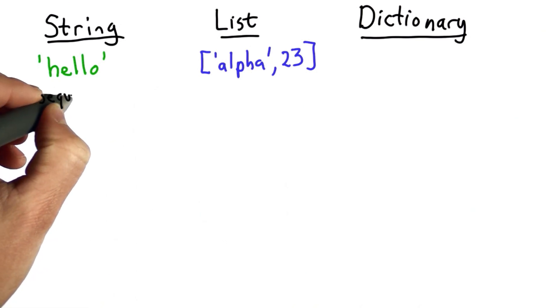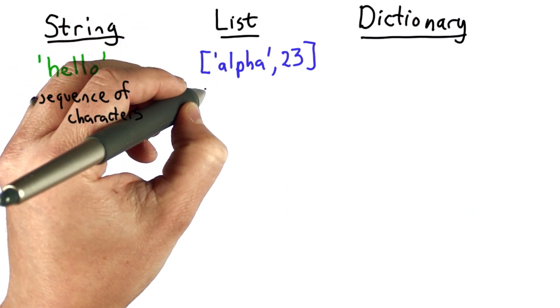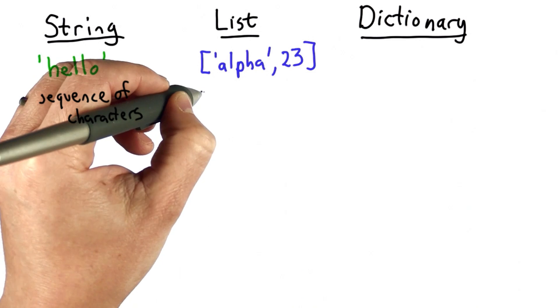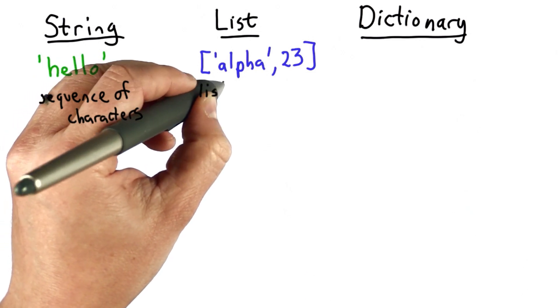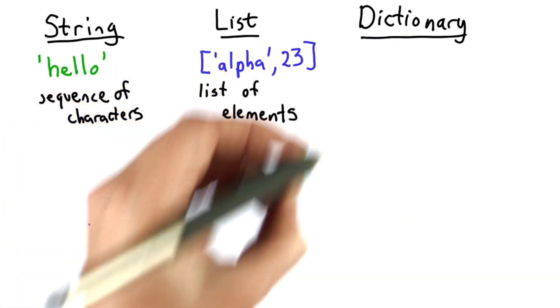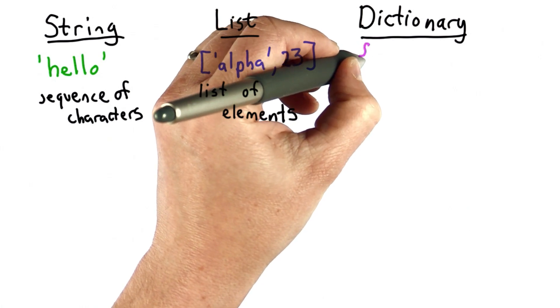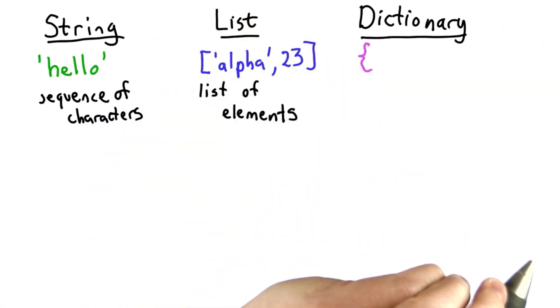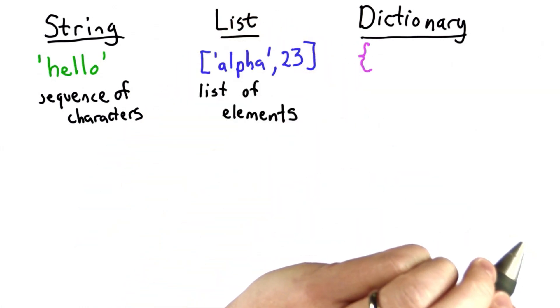So our string was a sequence of characters. Our list was a list of any kind of value, so a list of elements of any value. The dictionary type, we're going to create using the curly bracket. And the entries inside a dictionary are key value pairs.